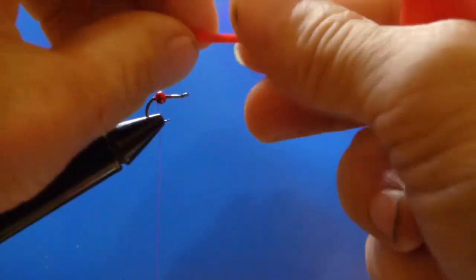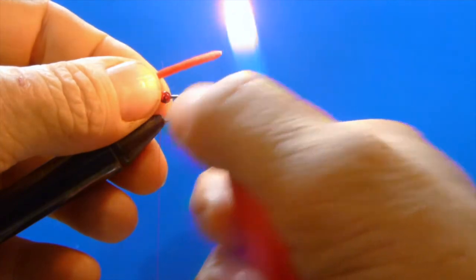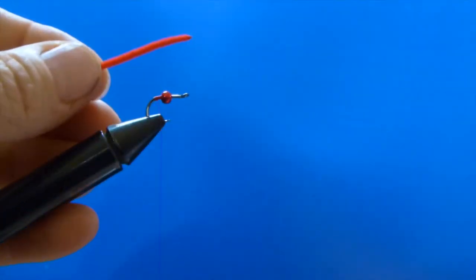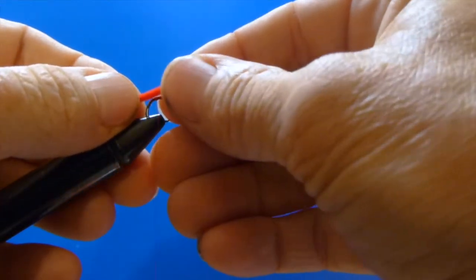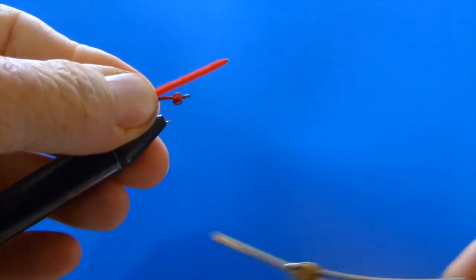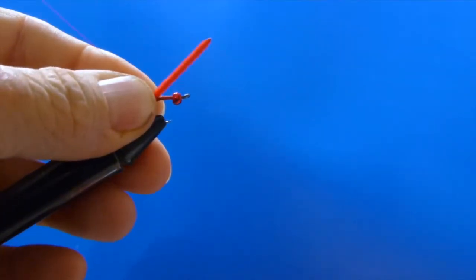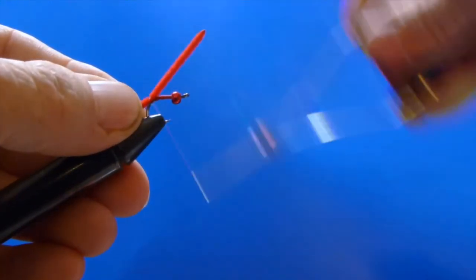Just to keep the chenille from unraveling while we're catching loads of kokanee here in a couple weeks. Now from all the way in the back, we're going to tie in our chenille, lock it in, give it a couple wraps, just like we did last time.